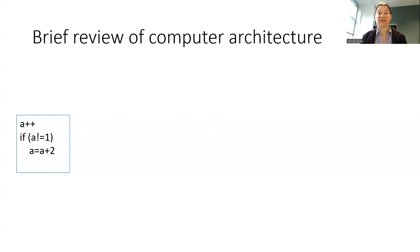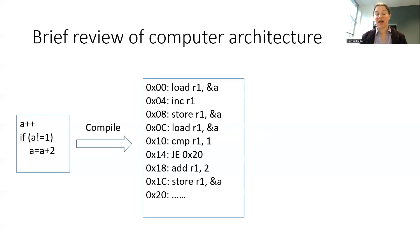When we compile that program, it produces assembly code which ends up getting turned into machine code located at particular addresses. The human-readable version would say that at location 0x00, we have an instruction that says we're going to load into register one a variable called 'a', specifically the address of 'a'.